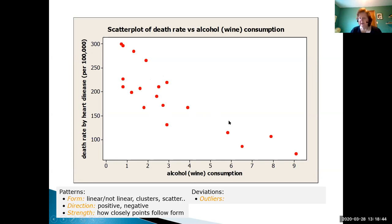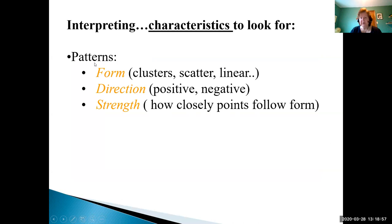But we have maybe an issue with these four points at the top here because maybe they look like they don't belong, maybe they are possible outliers. So to wrap up, the characteristics to look for are the patterns: form, direction and strength, and then deviations or outliers.